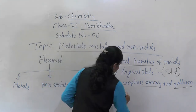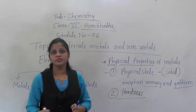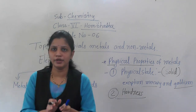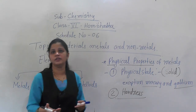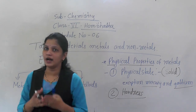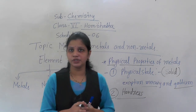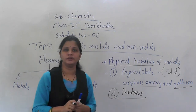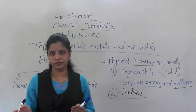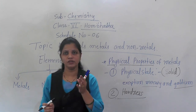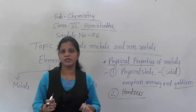The second property is hardness. All metals are very hard. For example, iron — most of the time we use iron and it is very hard. So mostly all metals are hard. But there are some exceptions. Sodium metal is very soft — you can even cut it with a knife. So sodium is exceptionally very soft; all other metals are very hard.